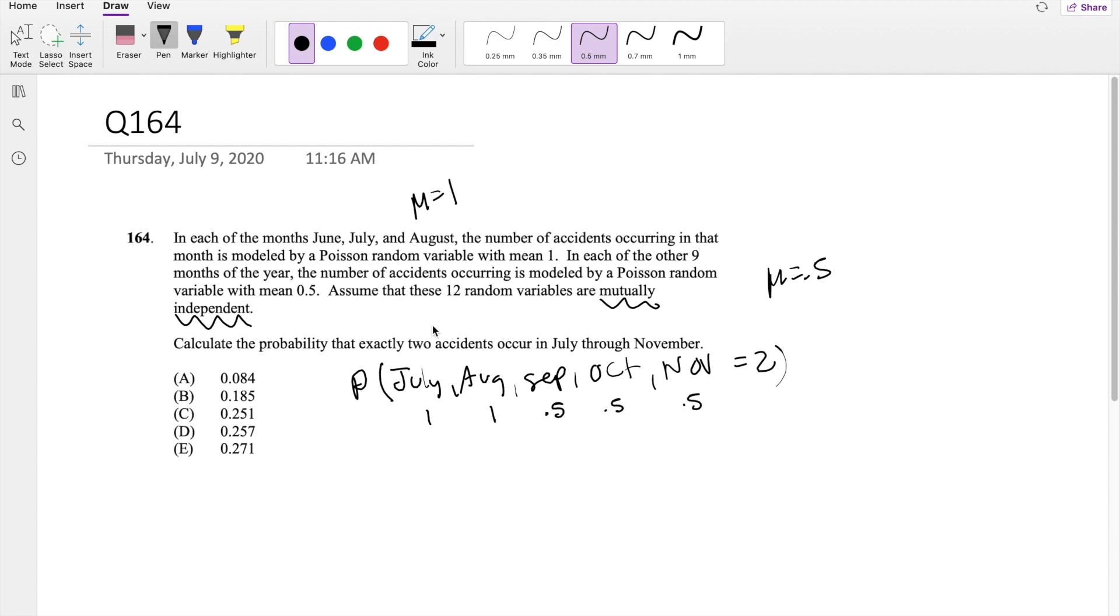Then we can assume that the mean within these 5 months is just equal to 1 plus 1 plus 0.5 plus 0.5 plus 0.5, which equals 3.5. So we can assume the mean is 3.5 because it's mutually independent.